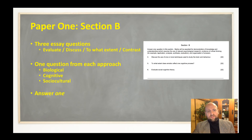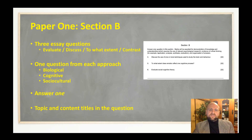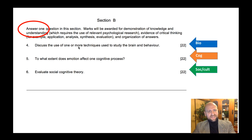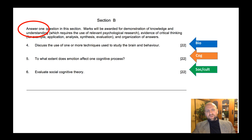Here's the really key part for the essay section: you only answer one question. This is critical when it comes to preparing for the exam and knowing what to revise. Just like short answer questions, the topic and content titles are in the question. Your essay should be about 900 to 1,000 words, compared to about 300–400 for a short answer response — so almost double or triple the length — which means you need more studies and some evaluation or counter-arguments.